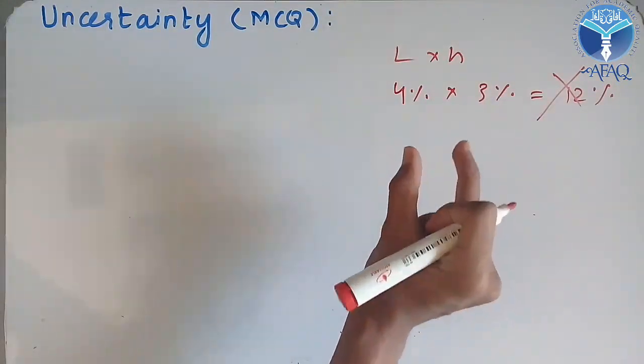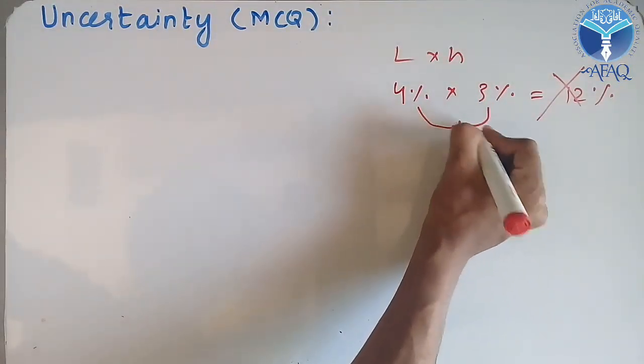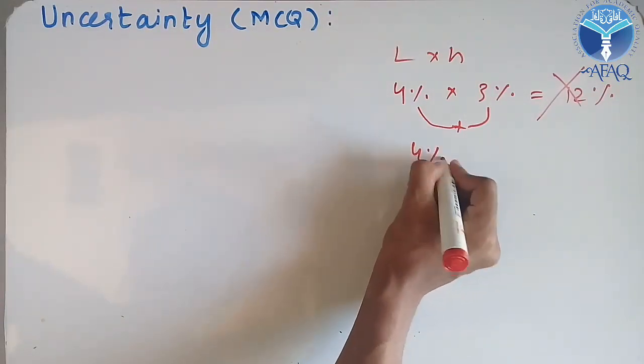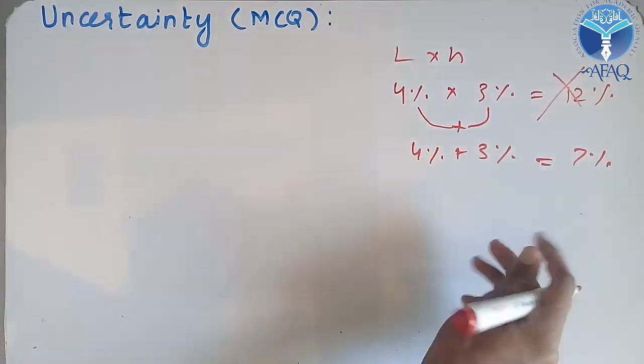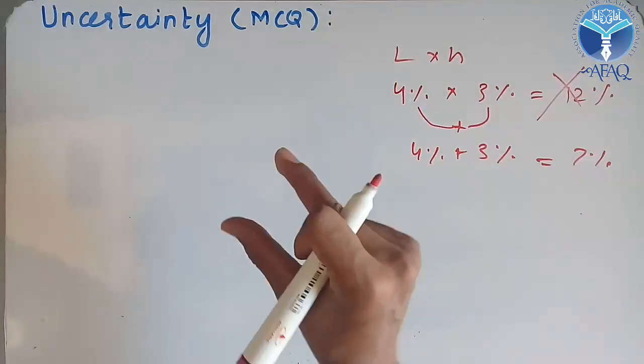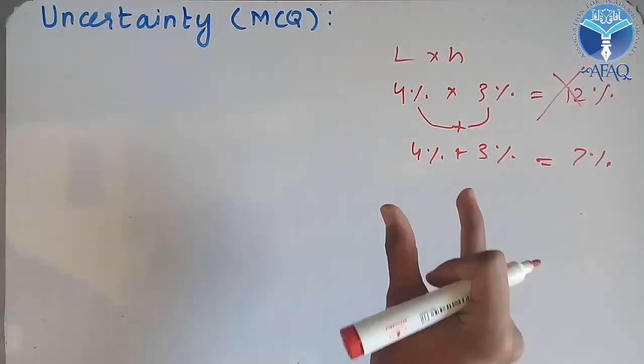Because in uncertainty and product rule, you have to just add these. Percentage uncertainty will be added, so 4% plus 3% will be equal to 7%. You have to remember that percentage uncertainty in case of multiplication, everything will be added.